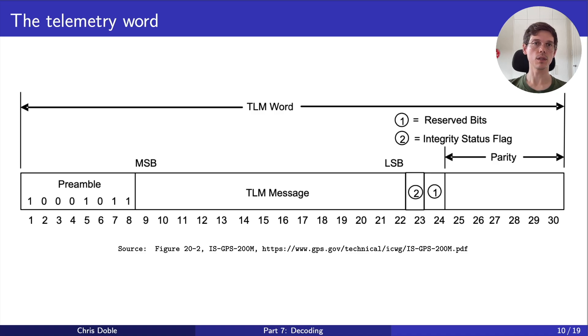It contains the preamble we used to determine the bit phase, a telemetry message that's needed to use the military's precise GPS signal, a flag that tells us if the satellite's operating in a higher precision mode, a bit that's not used for anything, and the parity bits. For our purposes, we only care about the preamble, and we've already used that, so we can ignore the telemetry word.